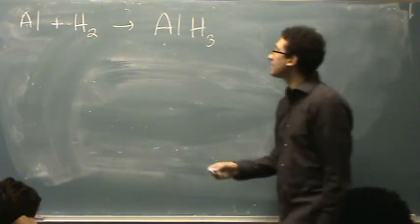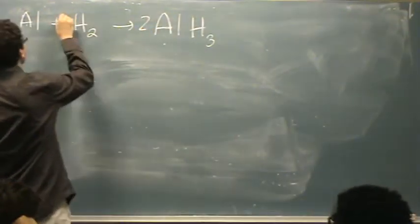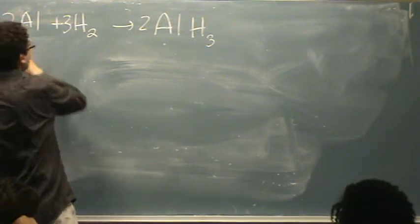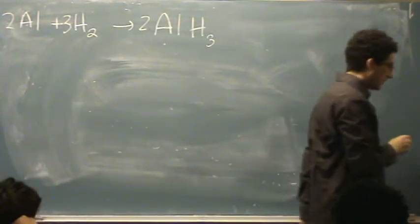Now I've got to balance it. If I put a 2 here and a 3 here, and then a 2 here, that'll count for everything.